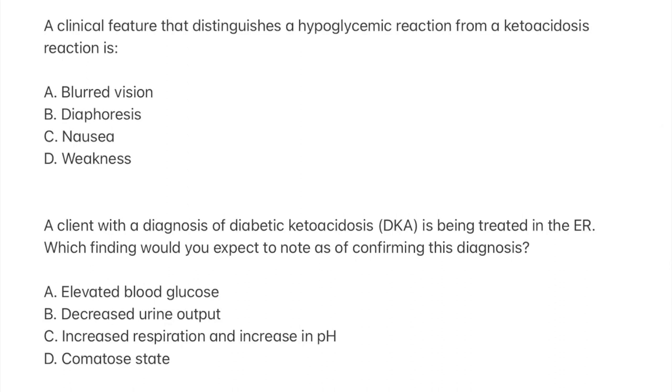Now we have the next question. A clinical feature that distinguishes a hypoglycemic reaction from a ketoacidosis reaction is? The right answer is diaphoresis, wherein a hypoglycemic reaction results in activation of fight-or-flight response, which triggers release of epinephrine and norepinephrine. This results in activity in the autonomic nervous system, which is responsible for reactions people can't control, such as sweating and digestion.